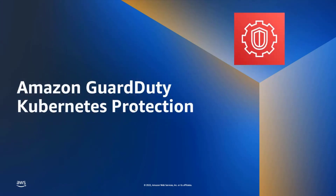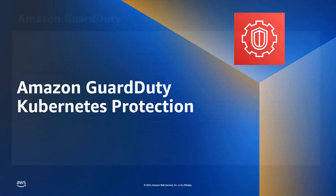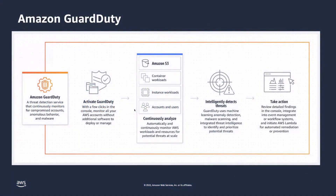The first feature I'd like to talk about is the Amazon GuardDuty Kubernetes protection feature. This is an extension of the overall GuardDuty service, designed to allow customers to get more insight into threats taking place against their Kubernetes workloads — specifically their EKS clusters running on AWS. GuardDuty is there to help you identify malicious, anomalous, or potentially compromised behavior that's happening against your accounts.